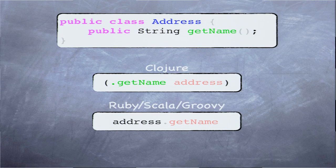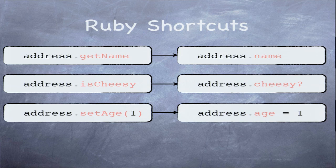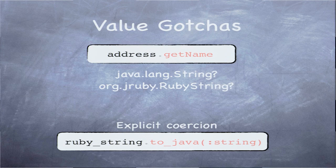If we look at a simple Java class — implementation of getName omitted — we've got a simple structure and two examples of how languages call directly into Java code. Clojure has the dot operation: '.getName on the address object.' In Ruby, Scala, and Groovy it's pretty much just a straight-up call like regular Java code. In JRuby and Groovy and to some extent Scala, there are improvements: it might be 'address.name' to access it, and 'address.name equals' as an assignment that calls the setter. In Ruby, if you have a Boolean return value, a version with a question mark is created — the typical Ruby way of indicating a boolean return.